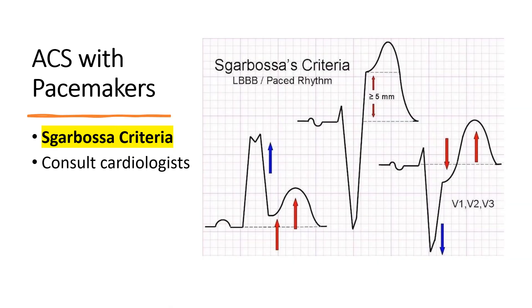Scarbossa criteria are used to identify myocardial infarction in the presence of a left bundle branch block (LBBB) or a ventricular paced rhythm. Collaboration with cardiologists is essential to consider this possibility.